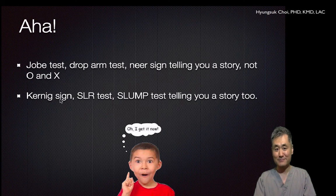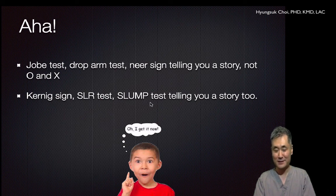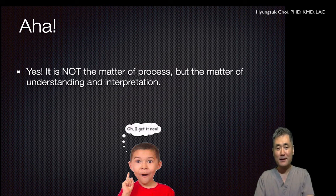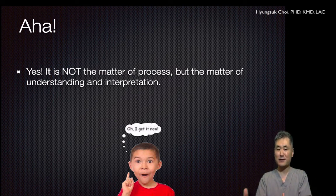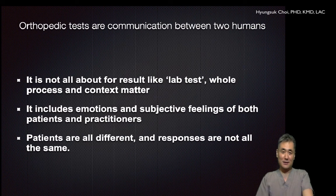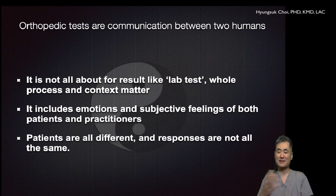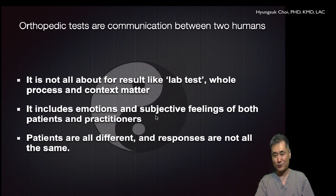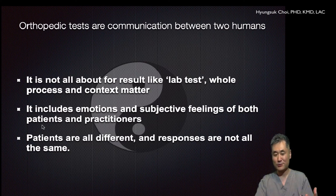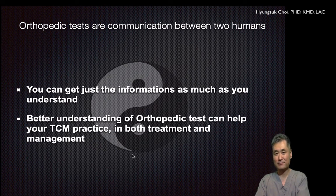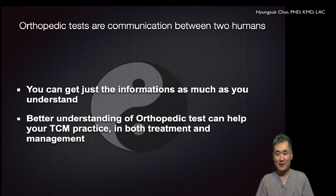Kernig's sign, meningitis SLR test, slump test, and hamstring test also tell you a story — not a black-and-white differentiation. It is not just a matter of conducting the test; it is a matter of understanding and interpretation. Orthopedic tests are communication between two humans — not a one-way procedure like a laboratory test. They include emotions and subjective feelings, like end-point feelings for both patient and practitioner. The patient will tell you all different descriptions of the provoked pain, and all different responses. You can get as much information as you understand. Thank you very much.